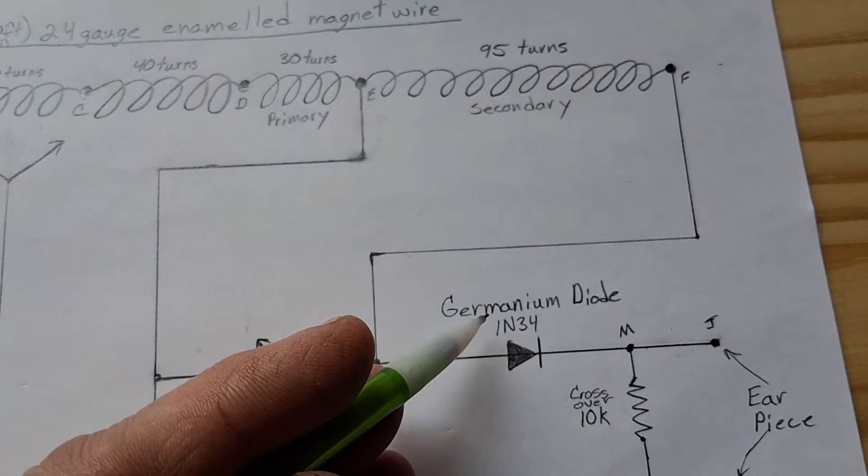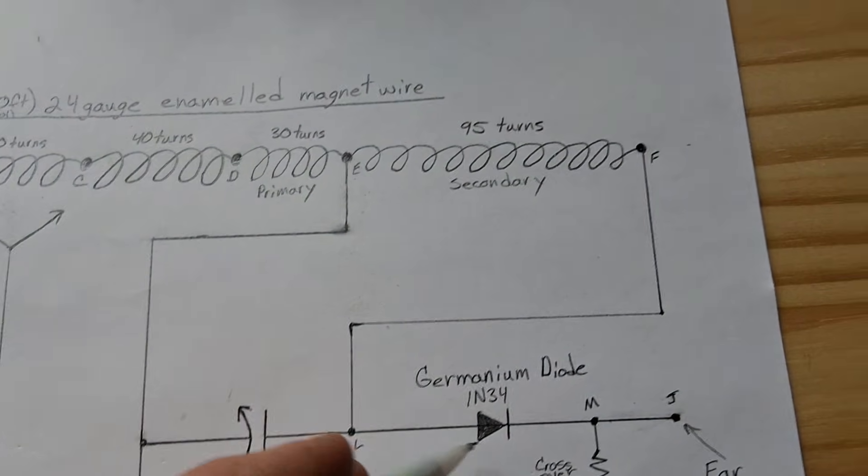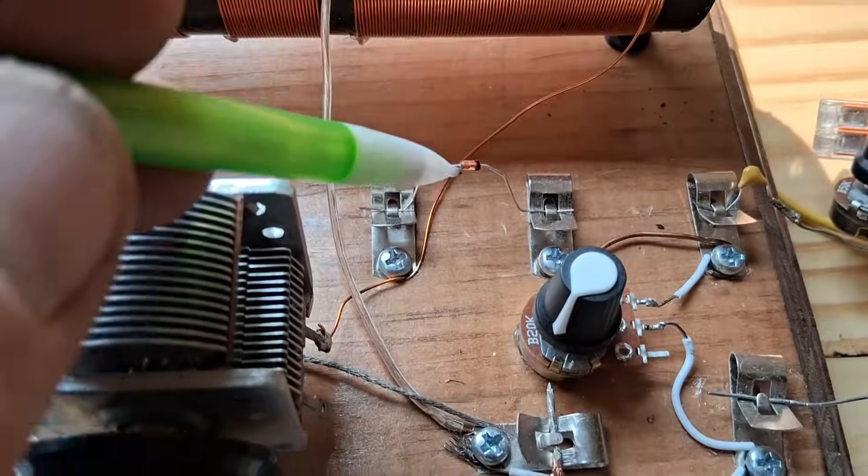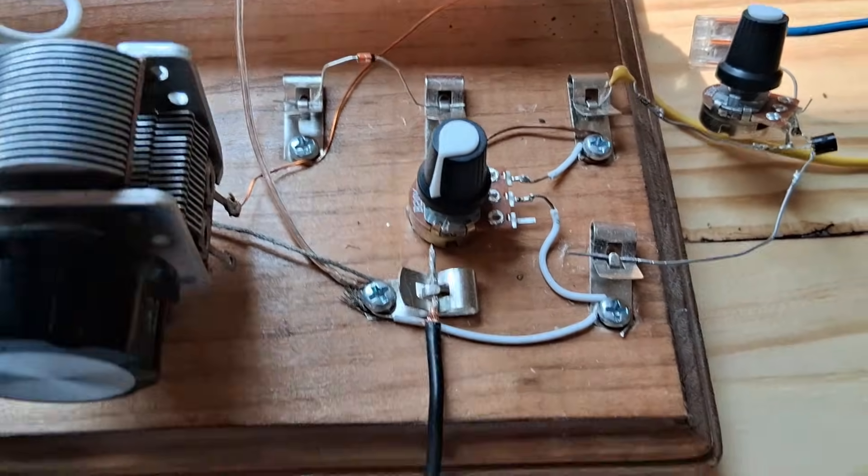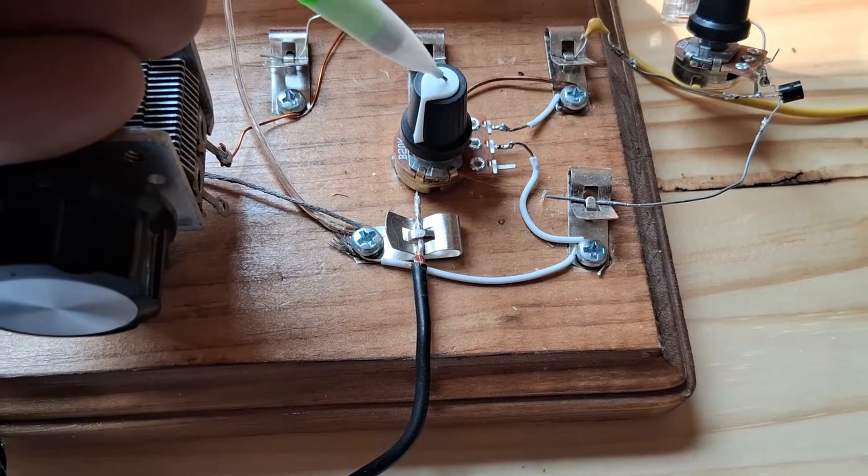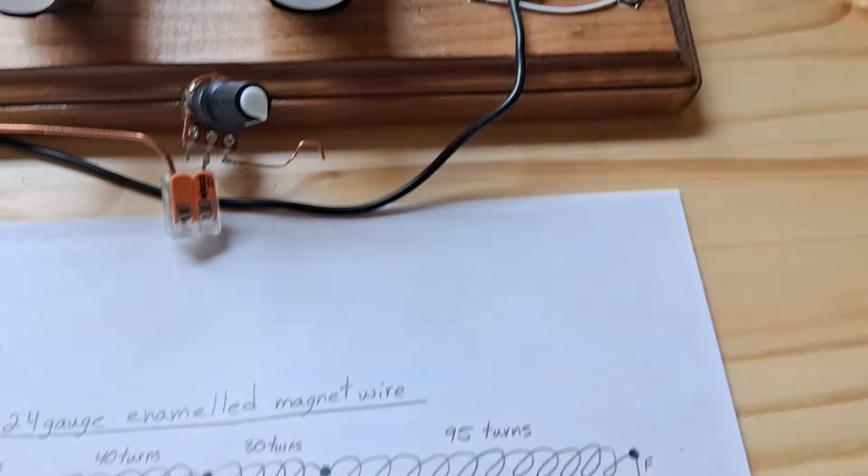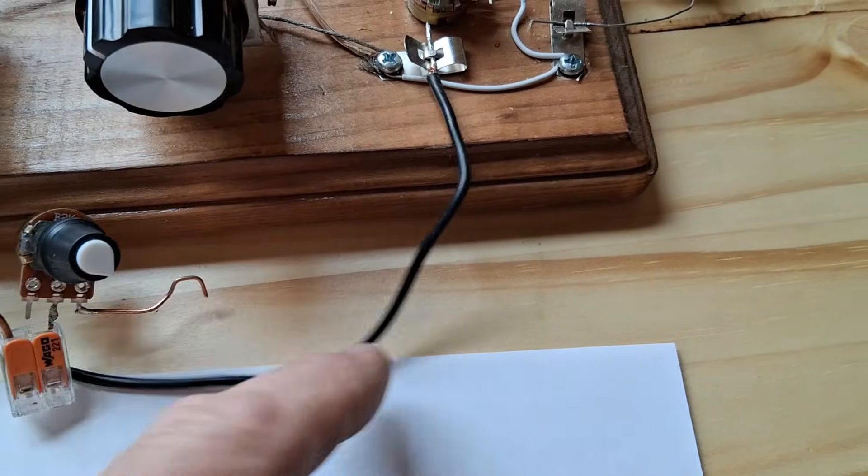And I'm just using the germanium diode, the N34. That's this guy right here between these clips. This is my crossover resistance. And this is my ground right here.